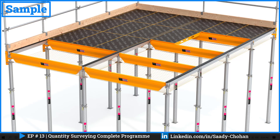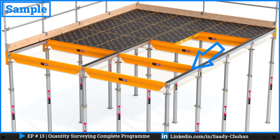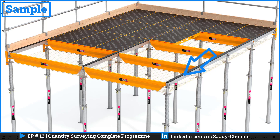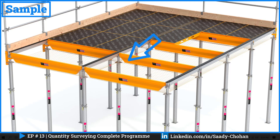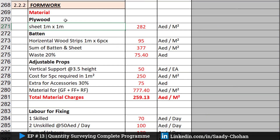So we have three things: plywood sheet, horizontal strips, and vertical support props. If we succeed in getting the rate for one square meter, the same rate can be used for all other slab areas. We need to focus on one square meter — how many vertical props, how many horizontal strips we need in one square meter. If we get the rate for one square meter, the rest will be easy. I have prepared this sheet; let's start with the top plywood sheet.